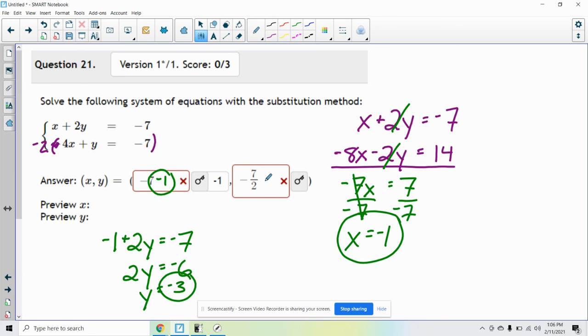So my answer is going to be negative 1, negative 3. Again, if you're not super comfortable with that, don't worry, that's what we're going to do this stuff.